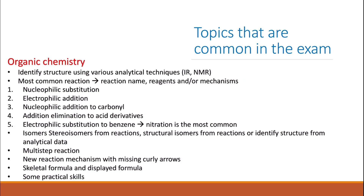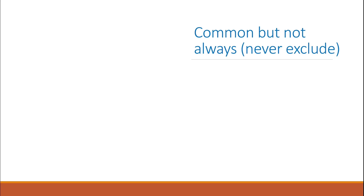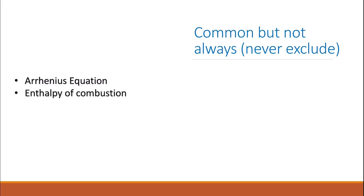There are topics which are quite common but not in every single exam — I would never exclude these. The Arrhenius equation was common in every exam but wasn't in 2024, so I wouldn't exclude it this year. Enthalpy of combustion calculation is also very common in Paper 2, not every year, and is one of the easier physical chemistry calculations. Chemical tests for functional groups are another common question I would never exclude.